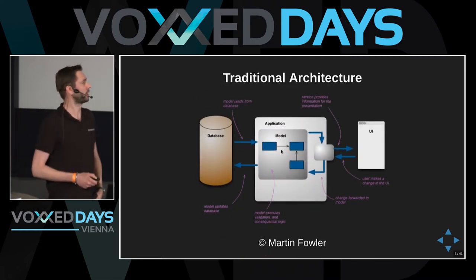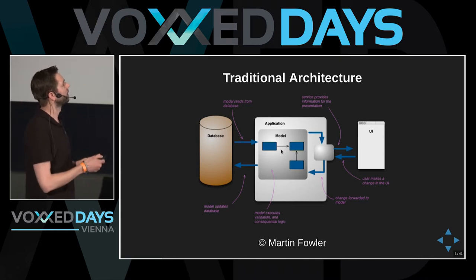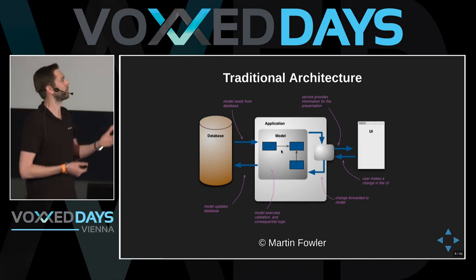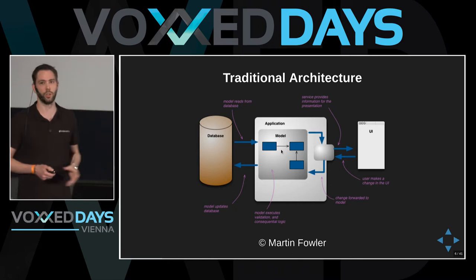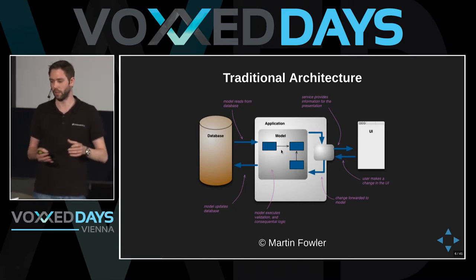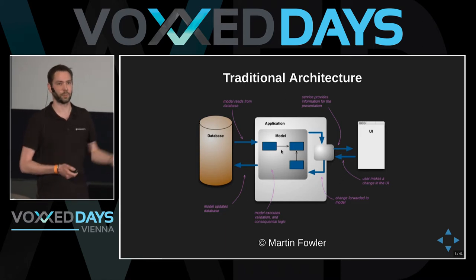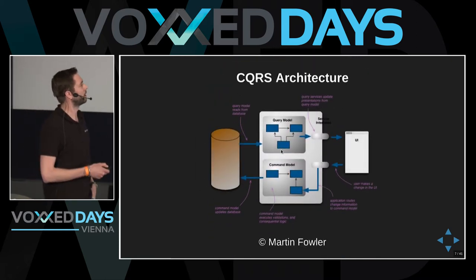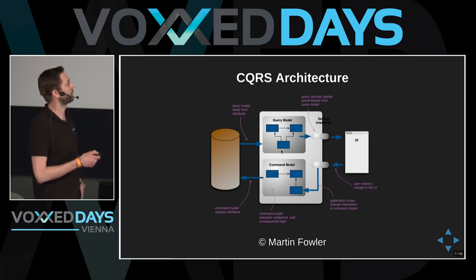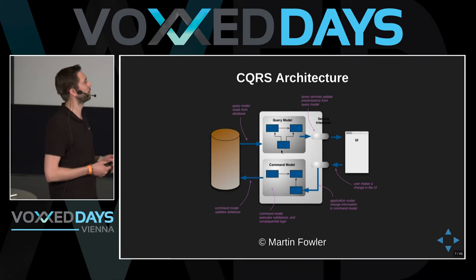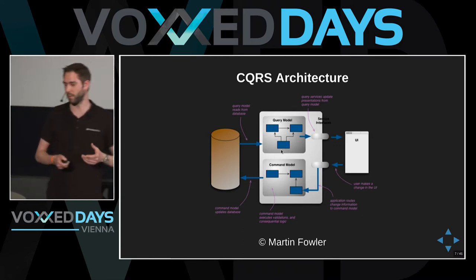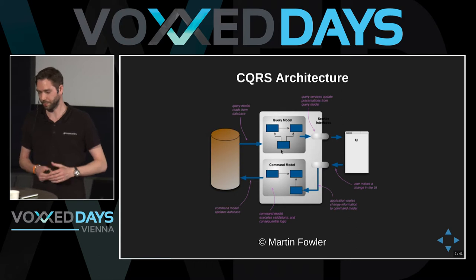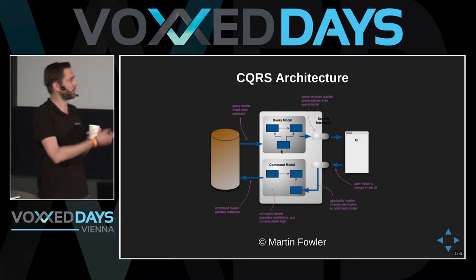When you look at a traditional architecture, the model is like a copy of the database — one-to-one. You load the model from the database, the model also goes to the UI. When you change something from the UI, you change the model and the model gets persisted. With CQRS, it's split up. You see different models: the command model looks much simpler, and the query model can still be the same copy being read — but it's separated. That's the main part.